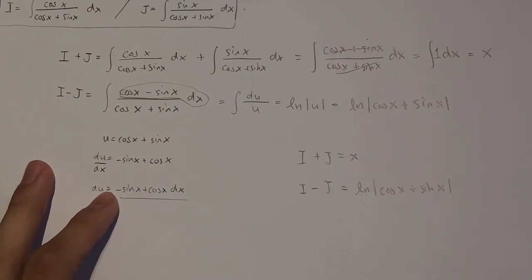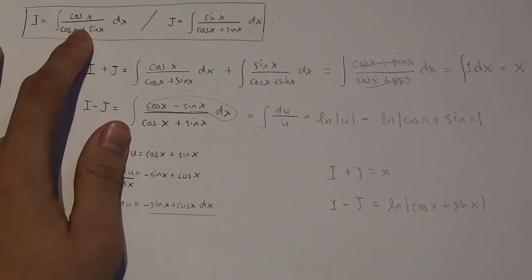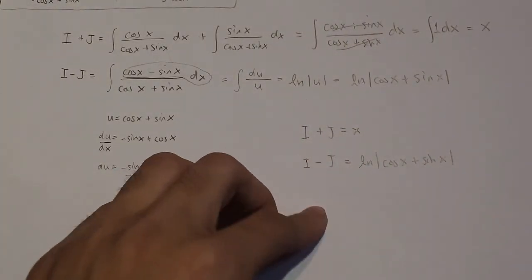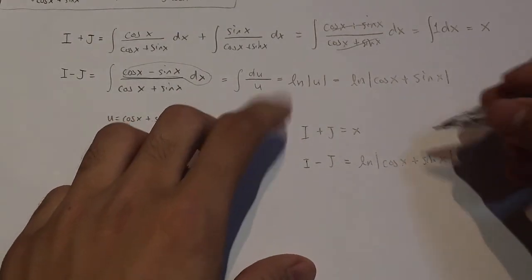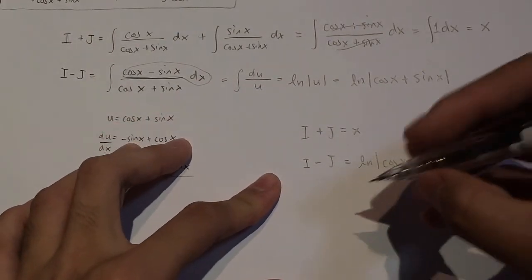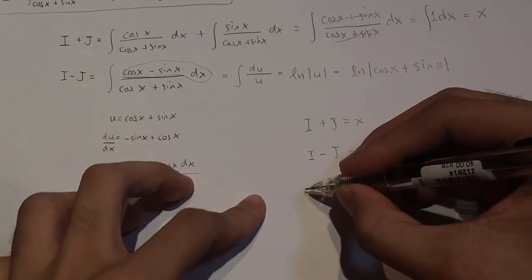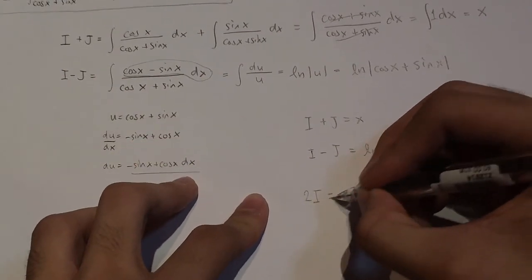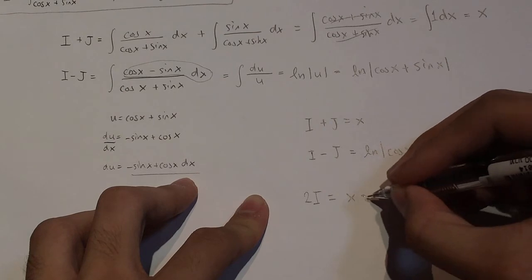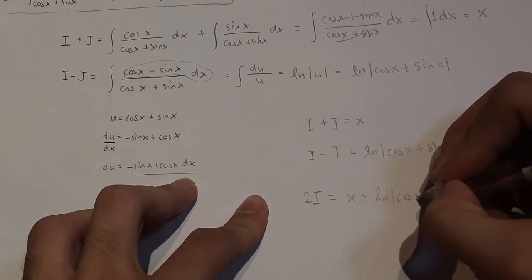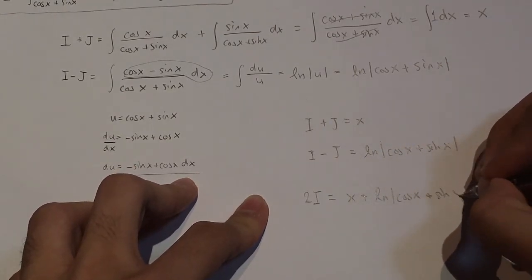And so the integral that we're interested in this question is this one. So what we're trying to do here, the final bit, is we're trying to work out what i is. So if I add both these two equations together, what I will get is I will get 2i equal to x plus the natural log of cos x plus sin x.